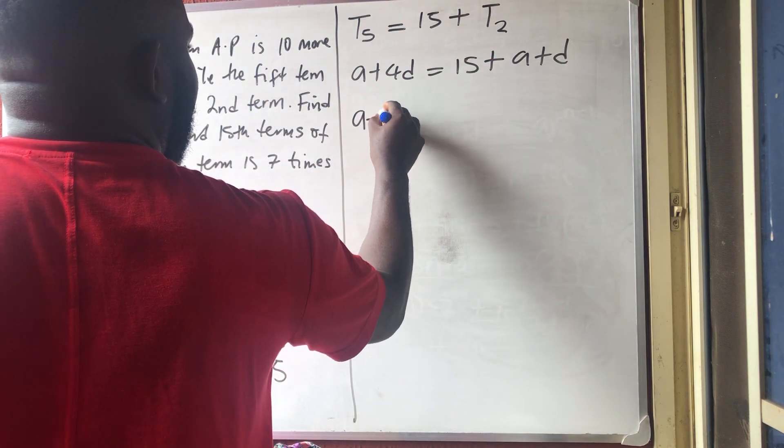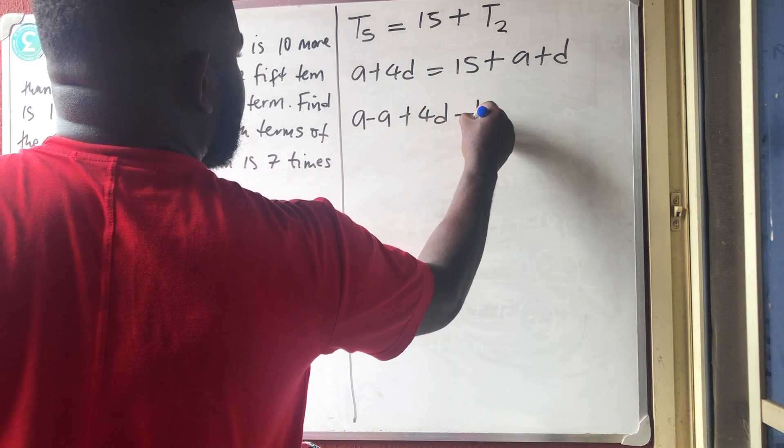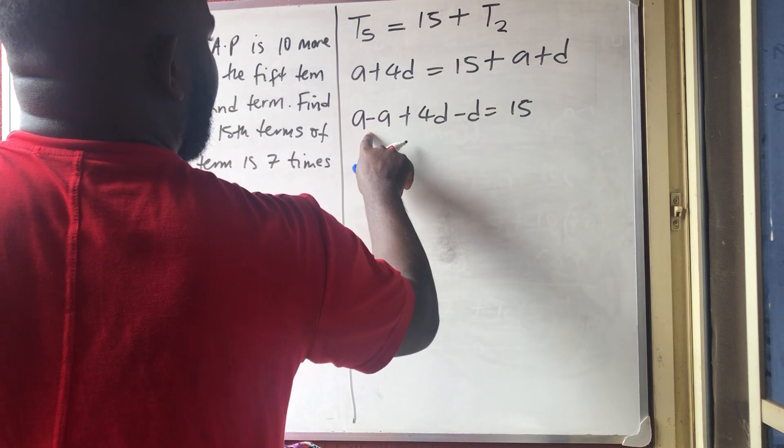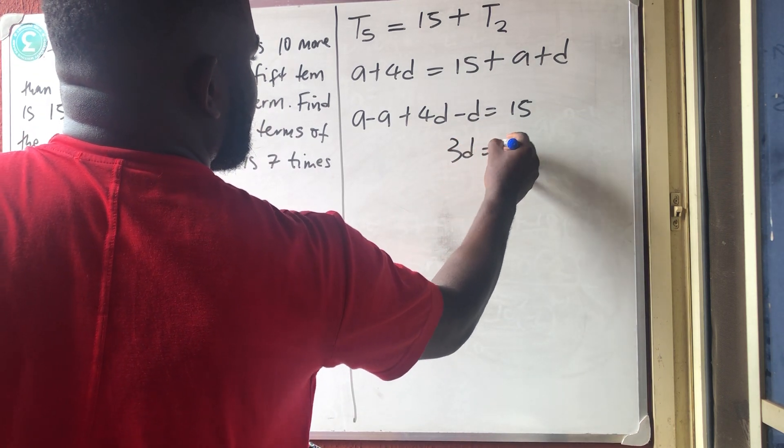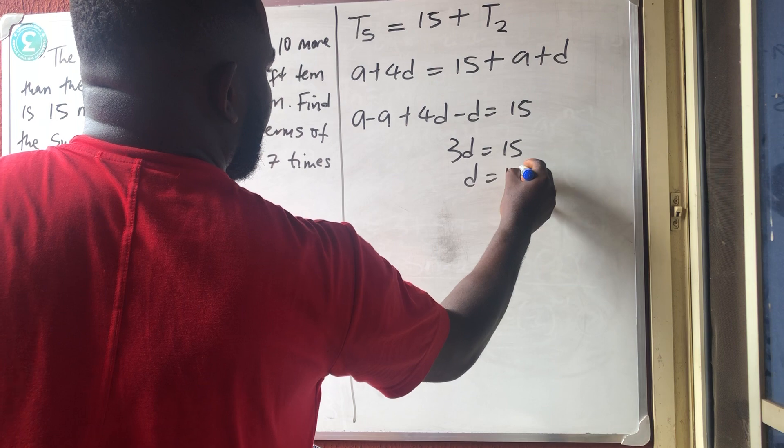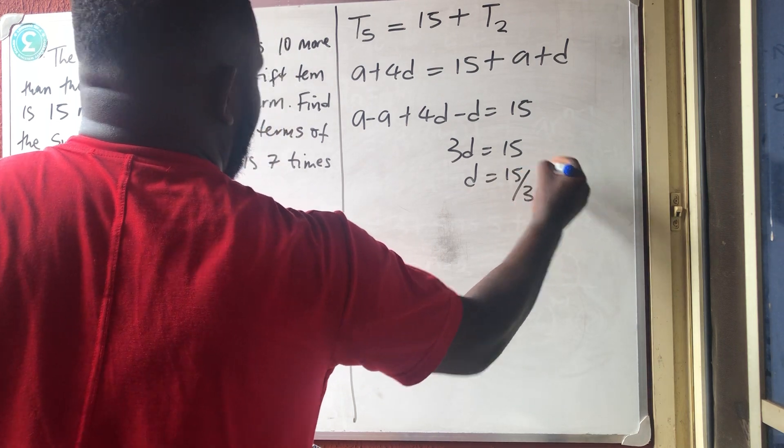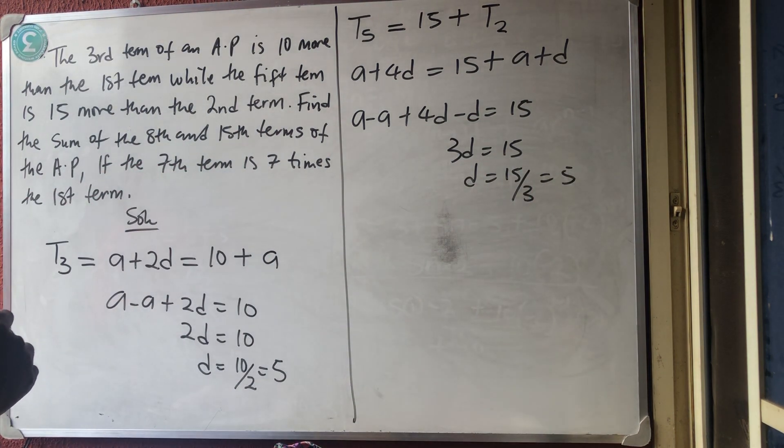I'm having A minus A plus 4D minus D is equal to 15. A minus A is gone. 4D minus D will give you 3D, which is 15. And D is equal to 15 divided by 3, which is 5. I've gotten the same D again.